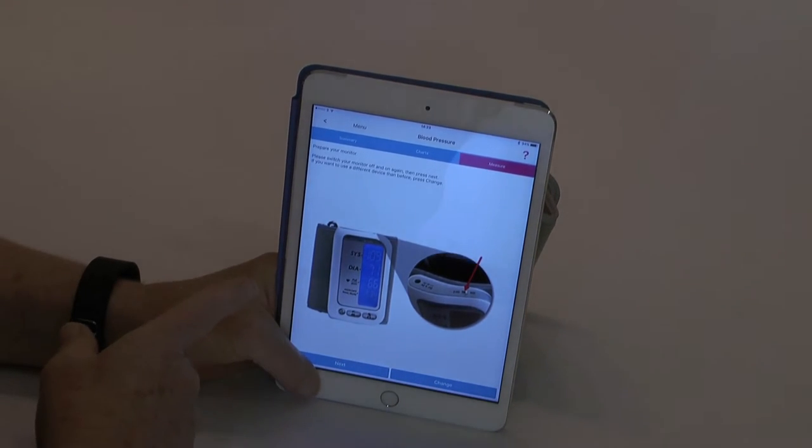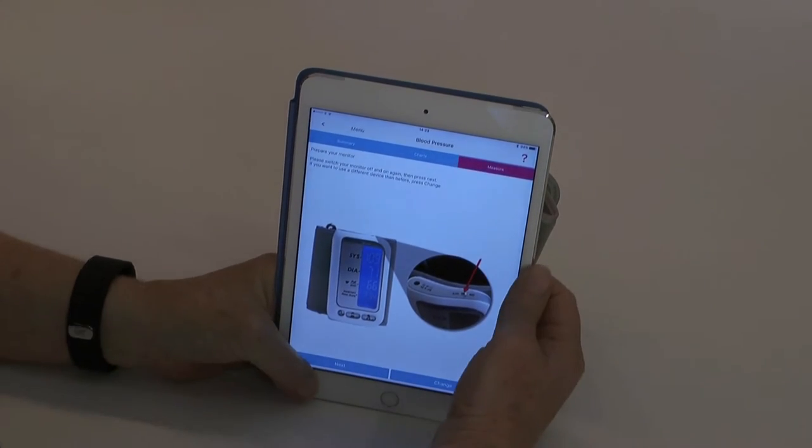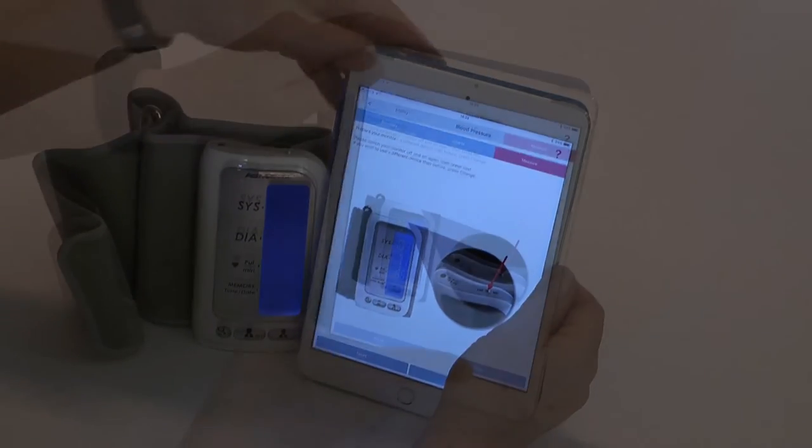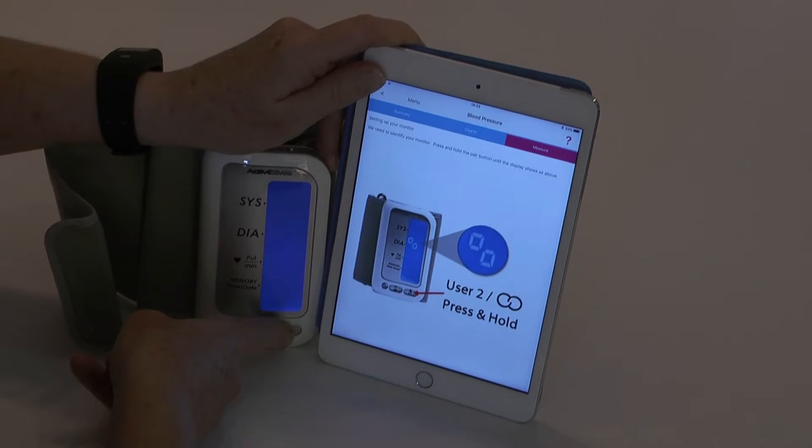First instruction is to turn on the device and associate that particular unit by pressing the user 2 button until you receive the symbol.